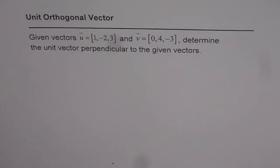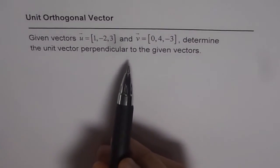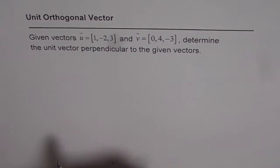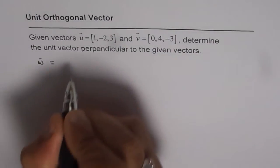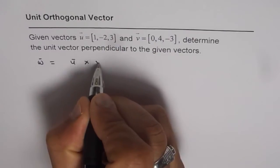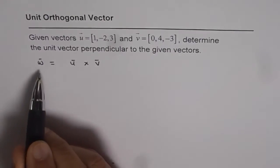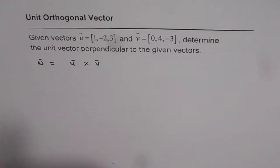In this example, we need to find a vector which is perpendicular to both u and v. That could be a result of the cross product — that is how we can find an orthogonal vector. There are actually two parts to this question: one is to find a vector perpendicular to both, which we can get by cross product. So let us say vector w equals vector u cross vector v. In that case, vector w will be perpendicular to both u and v.